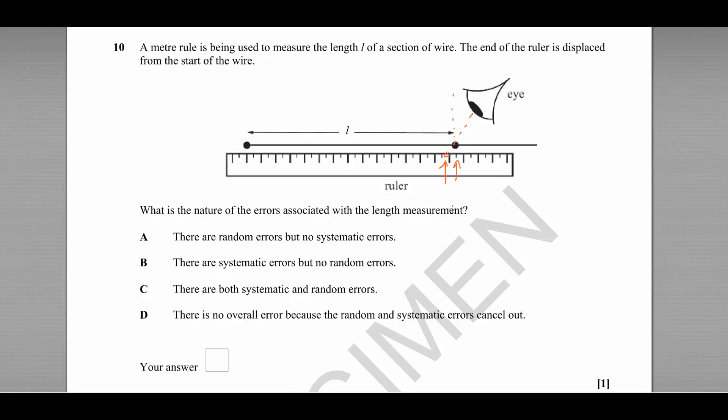That is a systematic error, and it's one that can be corrected by simply moving the eye directly above. This is known as a parallax error.